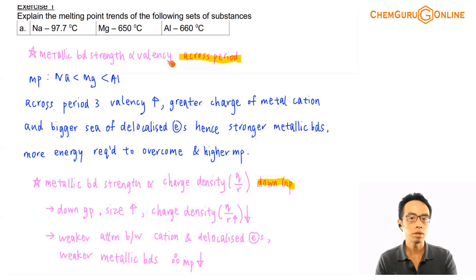So if your valency increases, you can de-localize more electrons, and you'll form a more positively charged cation, and you'll attract a bigger sea of de-localized electrons, so the metallic bond becomes stronger. We have this here, across period 3, valency goes up, so charge of the metal cation is greater.